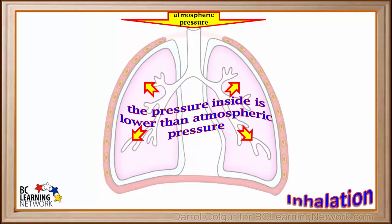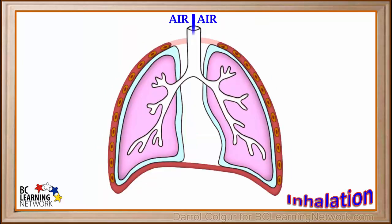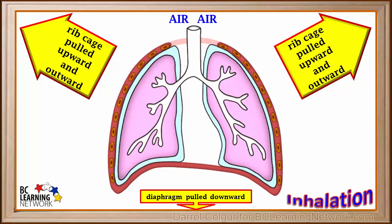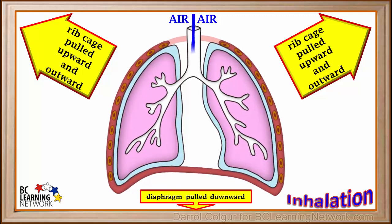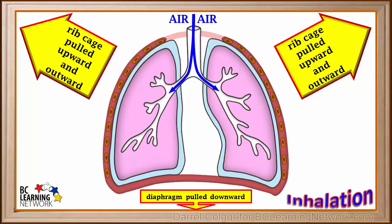Air will always move from an area of higher pressure to an area of lower pressure. When the pressure inside the chest cavity decreases, it becomes lower than the pressure of the surrounding atmosphere, so air moves in through the air passages in order to equalize the decreasing pressure inside the chest cavity — and that way we draw air into our lungs. The lungs do not have muscles of their own; we are able to inhale because muscles in the ribcage pull it upwards and outwards while muscles in the diaphragm contract to pull it down, and air moves in to equalize the decreasing pressure.